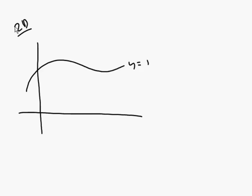I'd like to talk about the equation of the tangent plane in 3-space. Let's go back to the 2D world for a minute. If you have a function like y equals f of x, we know we can get the tangent line at a particular point by first finding the slope, knowing that it passes through x₀, and the corresponding y value would be f of x₀.